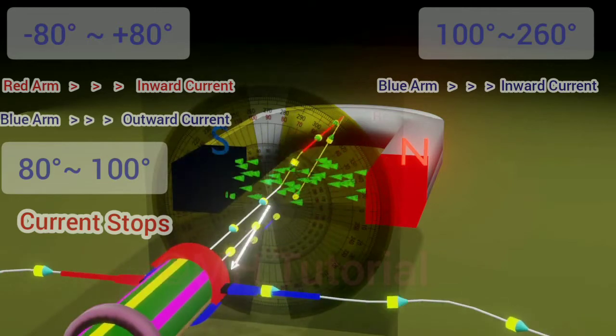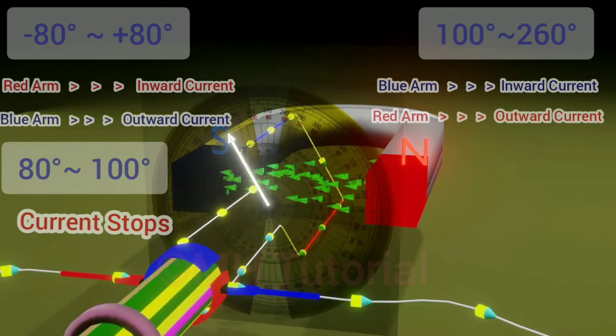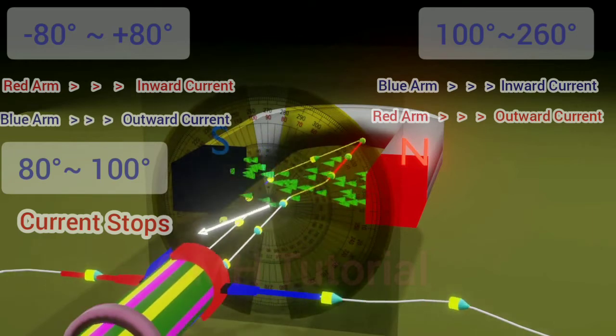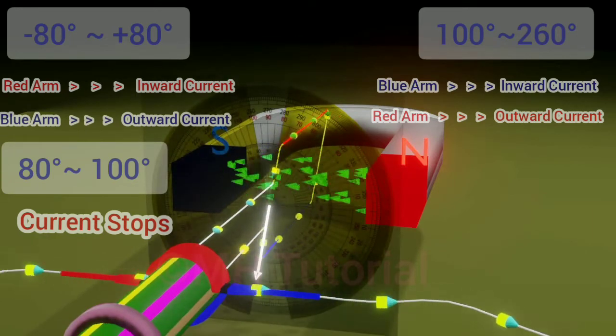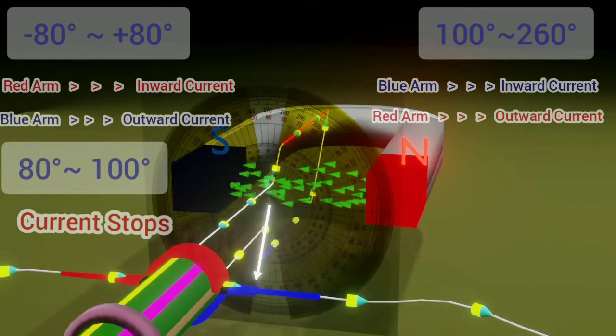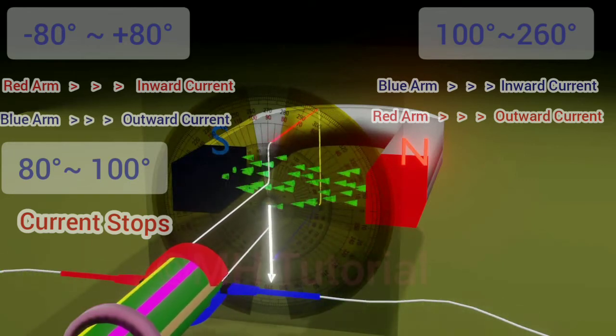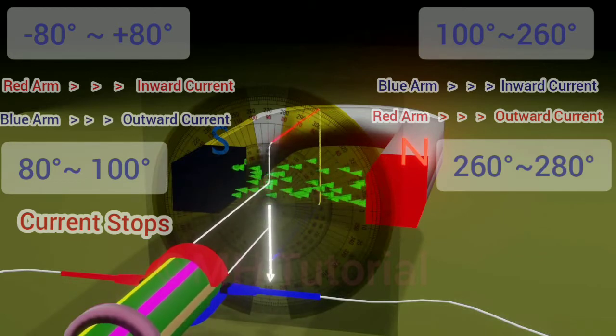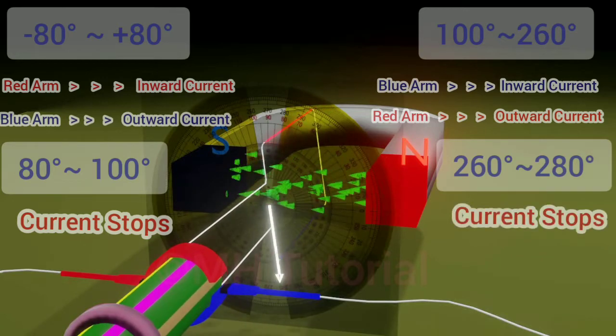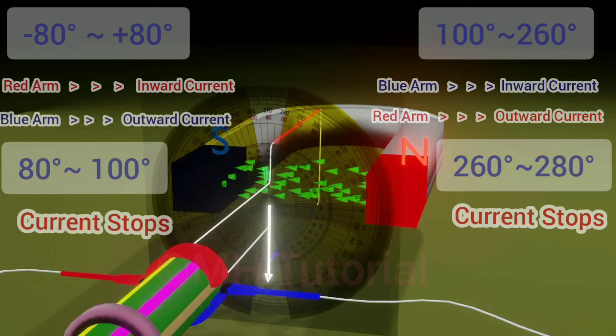And in the red arm near the north pole, the electric current will flow outwards. Thereafter the armature is rotated a bit to lay between 260 to 280 degrees with respect to the horizontal line, and in this case the line is disconnected again so the current stops flowing.